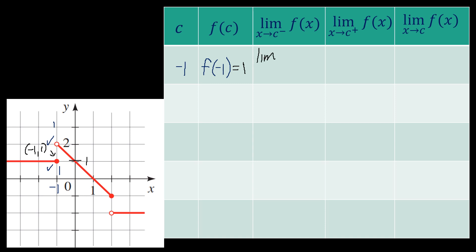What happens to function f of x as x approaches negative 1 from its left? Ang ibig sabihin nito, papansinin natin — if this is negative 1, ang kanyang left ay ito. Pag nilalapitan ang negative 1 from the left, saan papunta ang value ng y? Walang nagbago — papunta lagi ang y sa 1. Hindi siya umakyat, hindi siya bumaba. So, the limit from the left of negative 1 is 1.